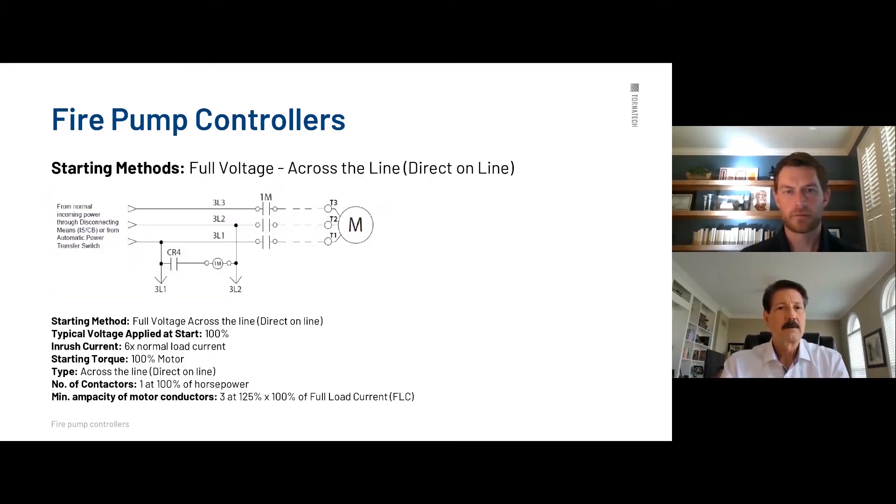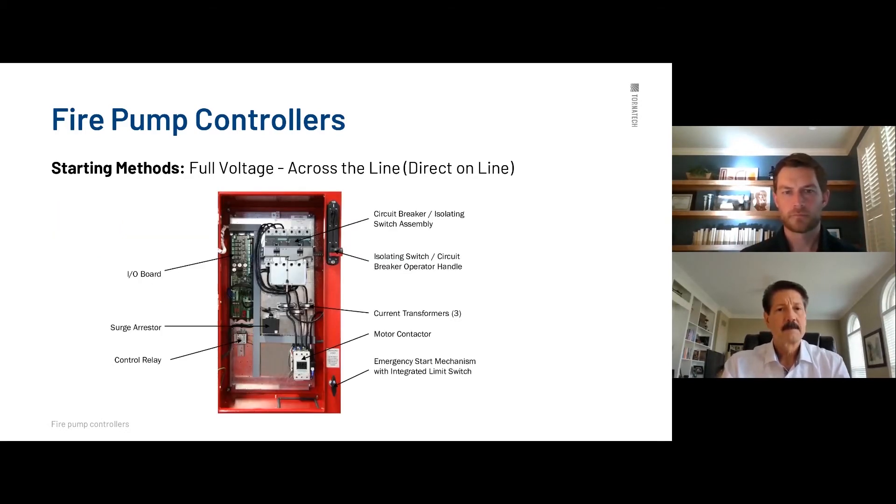So here we are across the line, full voltage. It's quite easy. Contactor opens and closes. Here's your three lines coming in. And again, T one, two, and three to your motor leads right here. It's very simple, very simple design. Internal components, pretty easy. Come in the top, loop up into the isolation switch here. It loops around through the magnetic breaker only down through the current transformers, which are sensing the amperage, draw the motor to the contactor right here. And this contactor is the workhorse.